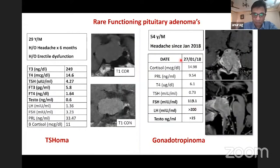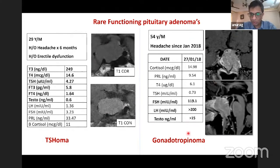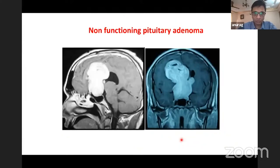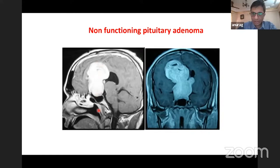For non-functioning pituitary adenomas: this is a thyrotrophinoma with classical macroadenoma appearance, and a gonadotropinoma. Gonadotropinomas can present with multicystic ovaries in females, elevated testosterone in males, or precocious puberty in children. This is one of the largest NFPAs I have encountered. NFPAs typically grow upward while GH adenomas grow downward, but even large tumors can be managed with transfrontal surgery.